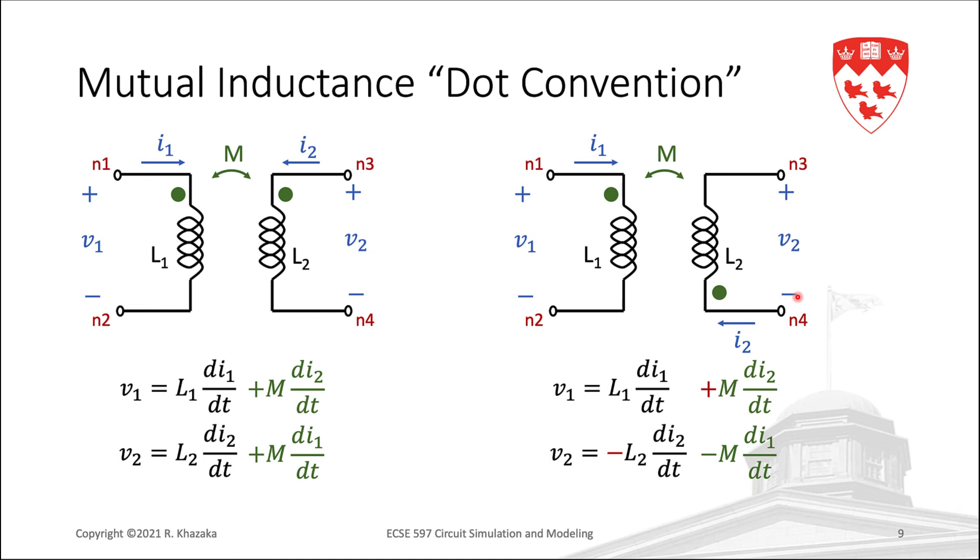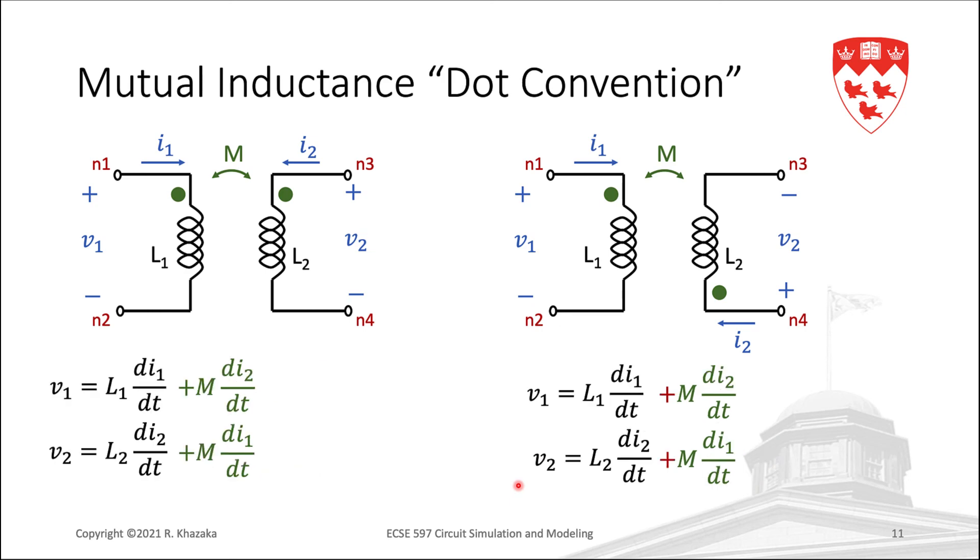Now the equations are wrong again, and we need to adjust the sign of V2 in the equations in order to take into account the new orientation. Okay, now we have minus V2 and the equations are correct again. All we need to do now is flip the sign of the second equation. Now we have the same model as before with a positive mutual inductance. All we have effectively done is exchanged the nodes N3 and N4.